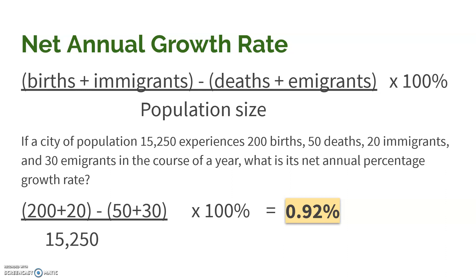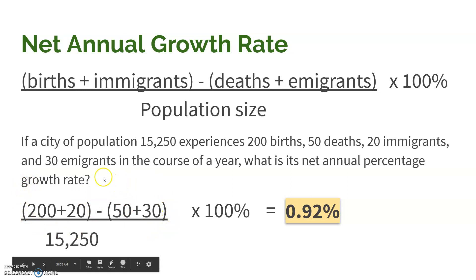We can also factor in how many people are moving in and out of a country to get a better idea of the population growth rate. A population grows by people being born or immigrating, and shrinks by people dying or emigrating. You add up those entering, subtract those leaving, divide by the population size, and multiply by 100 to get a percent. For example, a city of 15,250 people has 200 born, 50 dying, 20 immigrating, and 30 emigrating in a year. You add up the people entering, subtract those leaving, find the difference, divide by the total, and multiply by 100 to get the net annual percentage growth rate.